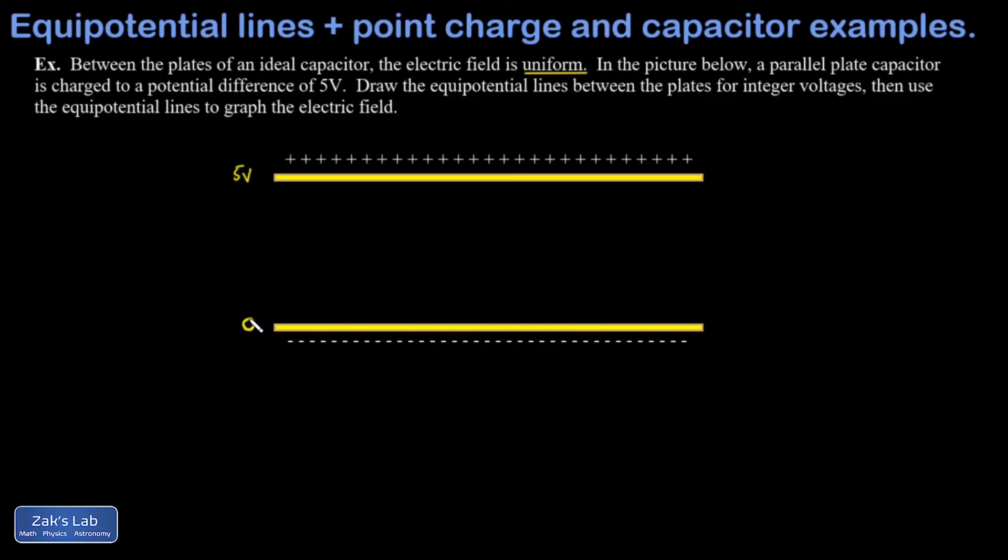When you're measuring voltage, it doesn't matter where you set your reference. So by convention at the lowest voltage, we call it zero. And the potential difference here is 5 volts. I want to draw the equipotential lines between the plates for integer values of voltage and then use the equipotential lines to graph the electric field.